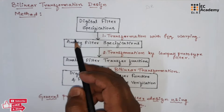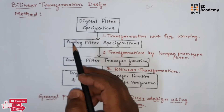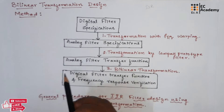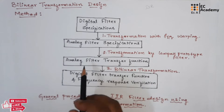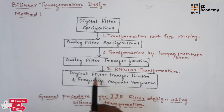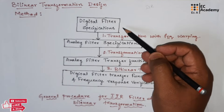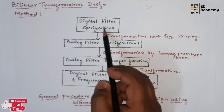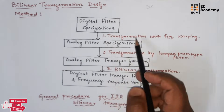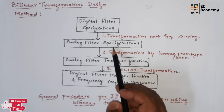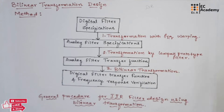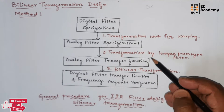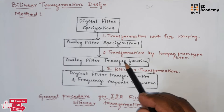Here, we need to transform the digital filter specifications into analog filter specifications. Then, on those analog filter specifications, we need to perform analog filter design, and then apply bilinear transformation to obtain the digital filter transfer function and verify the frequency response. As you can see from this flowchart, the digital filter specifications are converted into analog filter specifications using transformation with frequency wrapping. All these steps you will easily understand when we design the filters. Just understand the different steps of how you can design an IIR filter.